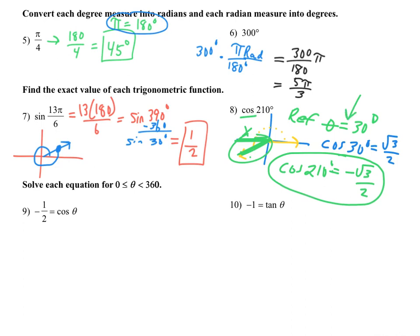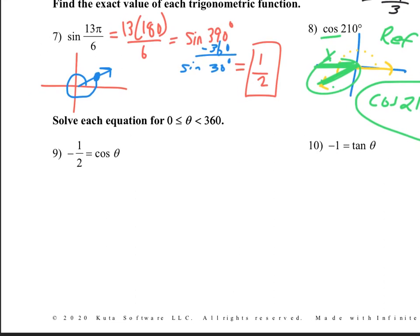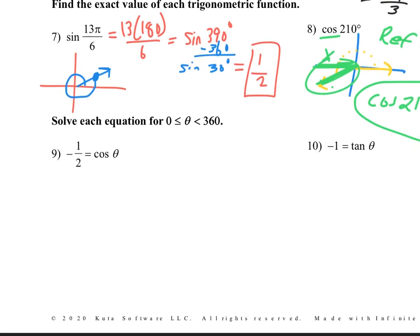The last couple — I'm still going to use the unit circle. This time they're giving you the answer and want you to find the angle. They say solve each equation for 0 ≤ θ < 360 — so they're just saying solve it for one time around the circle. For example, if the answer is 30 degrees, we wouldn't also say 390 like what happened in number 7 — we're just going to give the answers between 0 and 360. So: cosine equals negative 1/2. I need to find the reference angle — I'm going to ignore the negative for now.